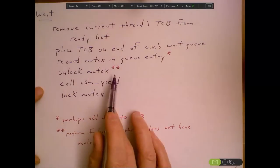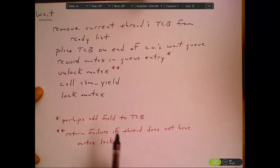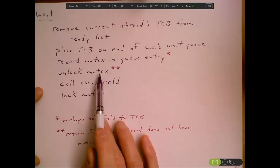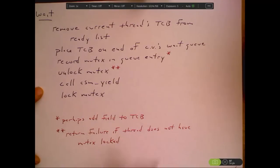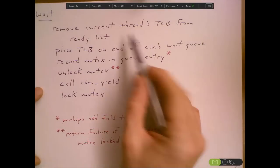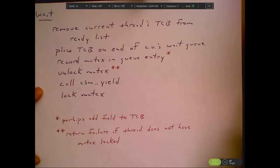So we call the unlock routine or maybe a helper function that does the guts of the unlock. By the way, we do have an error check here that if the mutex that the caller passed to us is not locked by the caller, then we're going to fail out here. We're going to return failure out of the wait function.